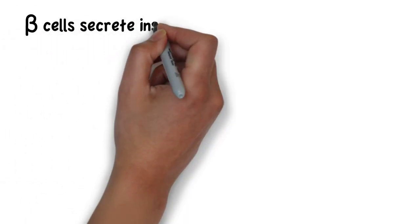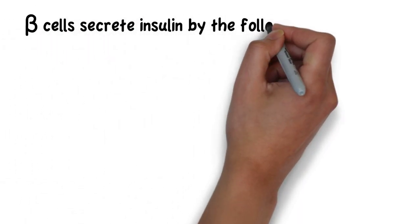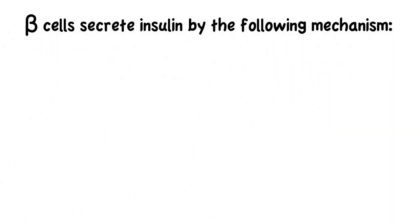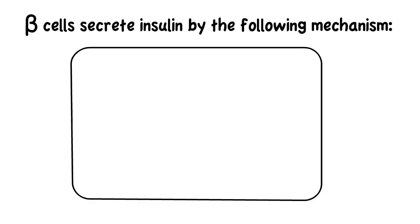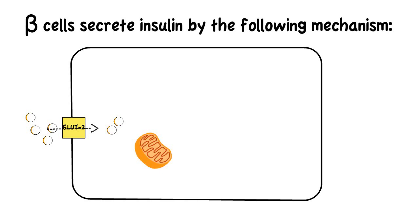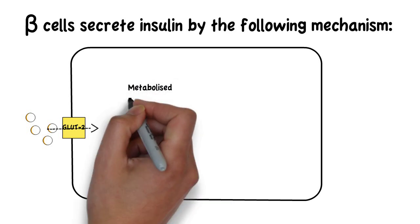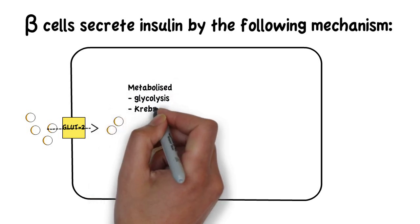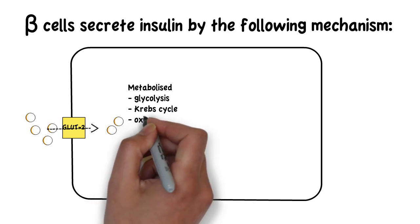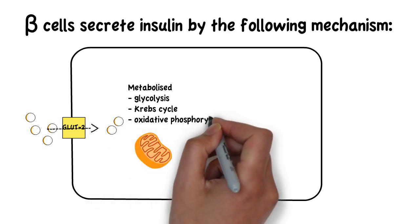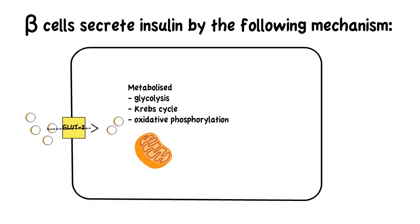Beta cells secrete insulin by the following mechanism. First, glucose enters beta cells by action of the GLUT2 transporter. Glucose is then metabolized through glycolysis, the Krebs cycle, and oxidative phosphorylation, leading to the production of ATP.